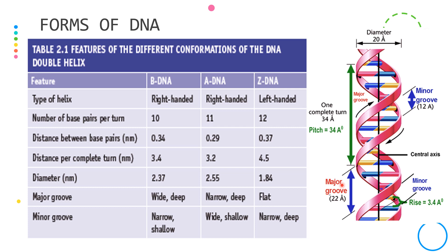For the A form, it has a narrower and a deeper major groove, while the minor groove is shallower and broader.